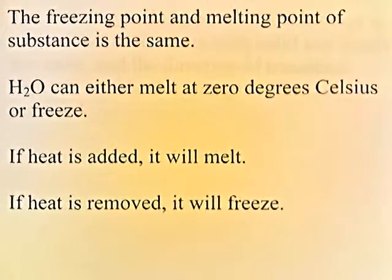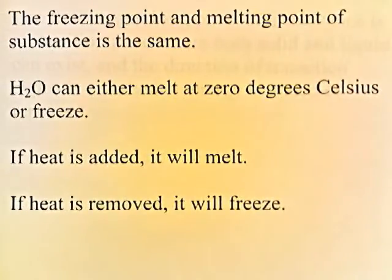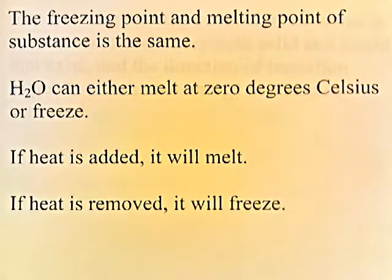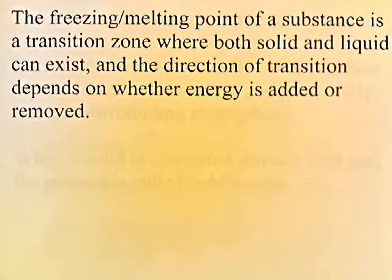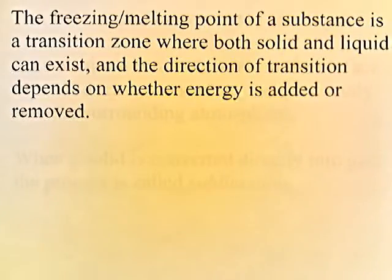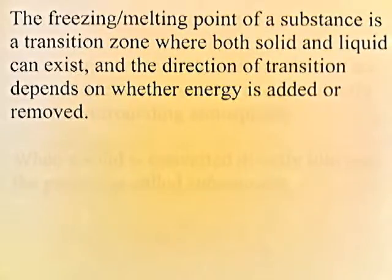The freezing point and melting point of a substance are the same. H₂O can either melt at 0°C or freeze — if heat is added, it will melt; if heat is removed, it will freeze. The freezing or melting point is a transition zone where both solid and liquid can exist, and the direction of transition depends on whether energy is added or removed.